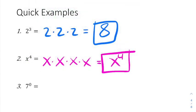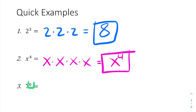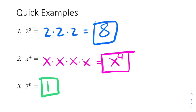This next problem is where we get tricky: 7 to the 0 power. Remember that sneaky little 1 in the multiplication chain? Well, when we have zero 7s, we actually need to write that 1 that's always hiding. So there's still that 1 and there are no 7s with it, so the answer is just 1.